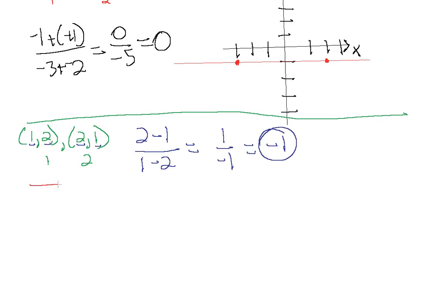Fairly straightforward, just using our slope formula here. Let's do another one. Let's say we have minus two, zero, and the point zero, three.